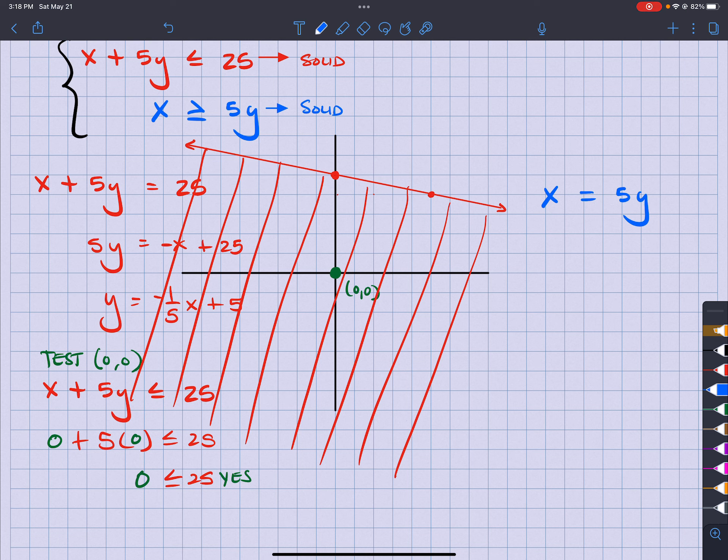So I'm going to get y by itself. So I just got to divide by 5. Right? So I'm going to have y is equal to 1 fifth x.